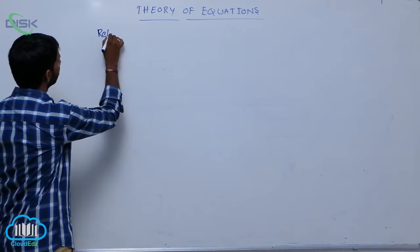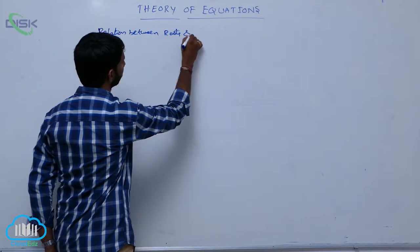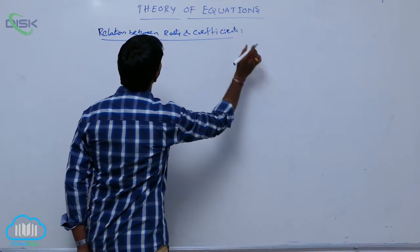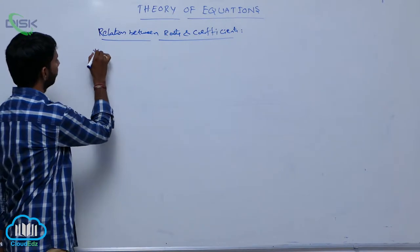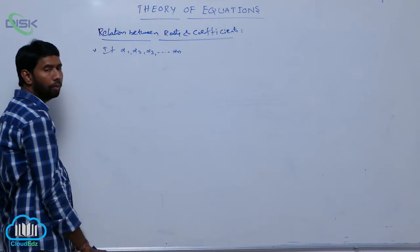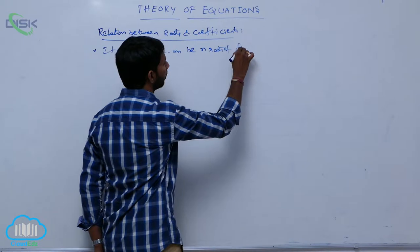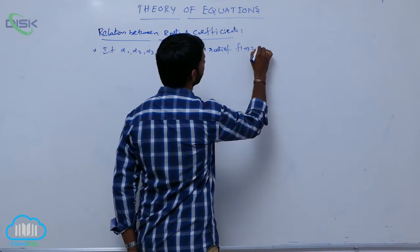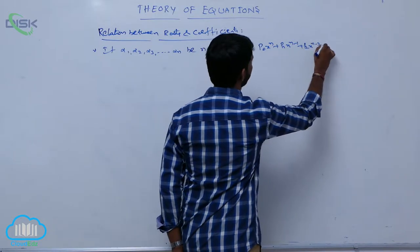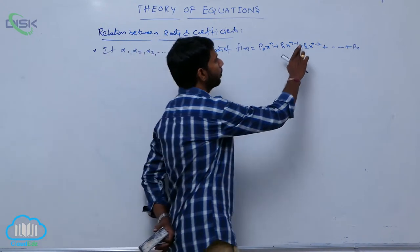The next topic is the relation between roots and coefficients of the equation. If alpha 1, alpha 2, and so on, alpha n be the n roots of the equation f(x) equal to p0 x^n plus p1 x^(n-1) plus p2 x^(n-2) plus and so on, pn.